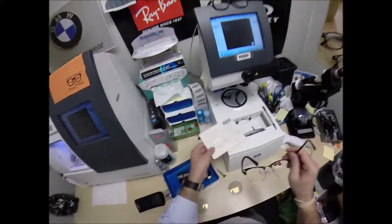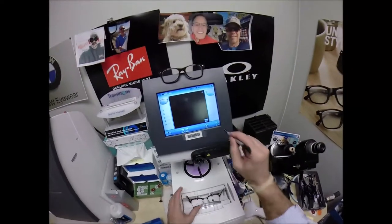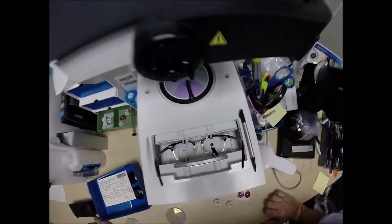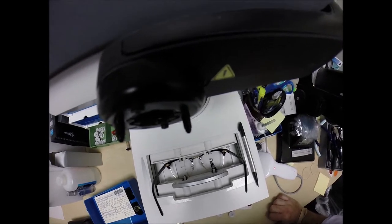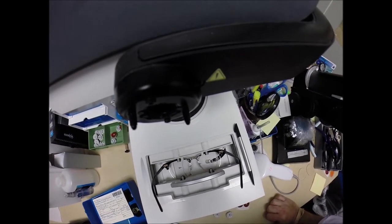So tighten back up. What I'm going to do is put your frame into the tracing element of my blocker and hit start. The stylus is going to pop up, go around, trace the inside bevel of the right side of the frame before doing the same thing on the left.